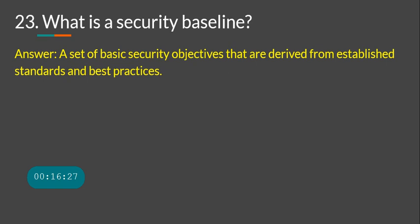What is a security baseline? It is a set of security objectives derived from established standards and best practices. Organizations publish security baselines — you can Google security baselines for Windows Server 2022, for example. Professional tools like Nessus can scan your system and identify deviations from the recommended security baseline so you can remediate.